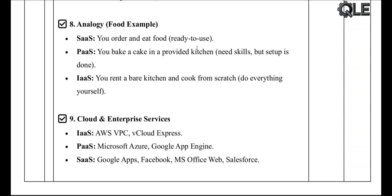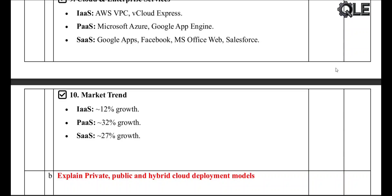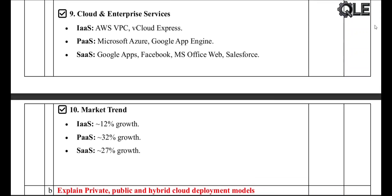Enterprise services examples: IaaS — AWS VPC, vCloud Express. PaaS — Microsoft Azure, Google App Engine. SaaS — Google Apps, Microsoft Office Web, Salesforce, Facebook. Market growth trends: IaaS is growing by around 12 percent, PaaS is growing faster at about 32 percent, and SaaS is also booming with a 27 percent growth rate.